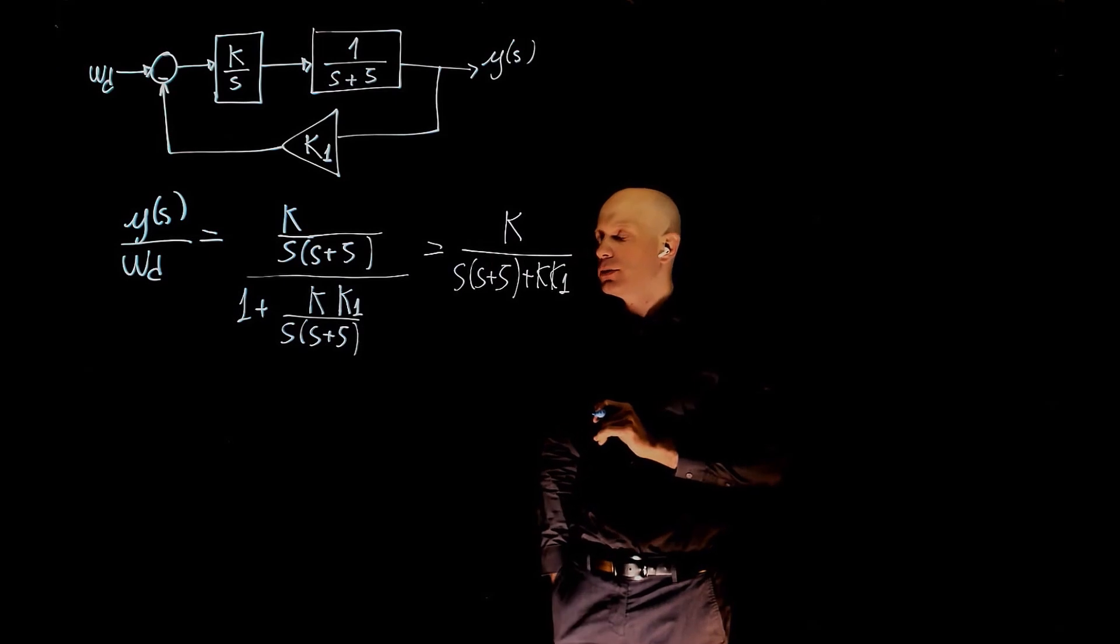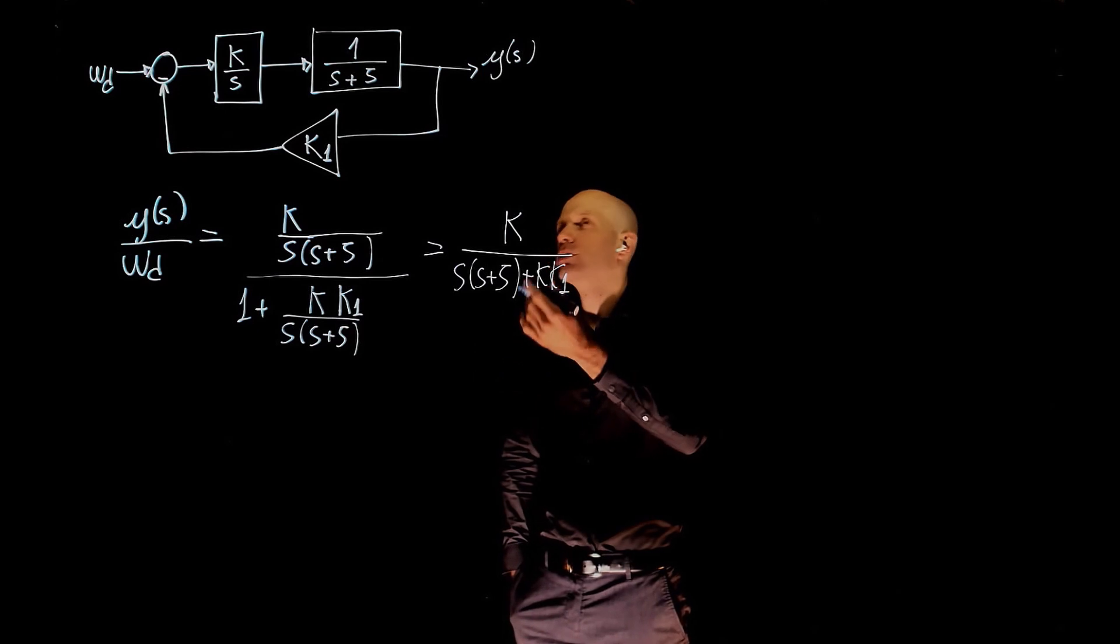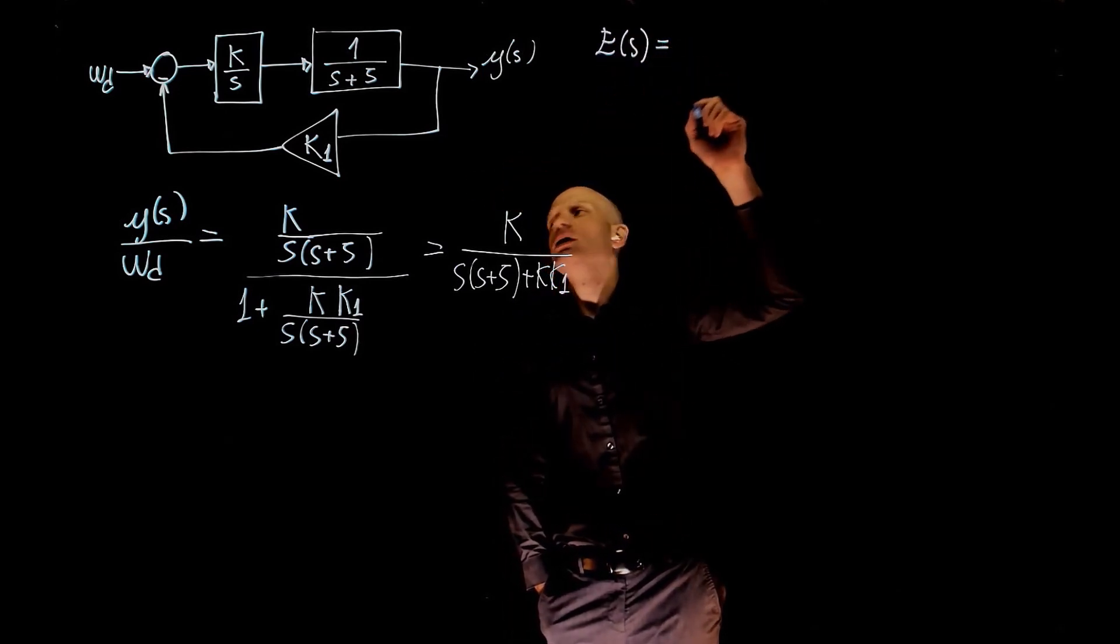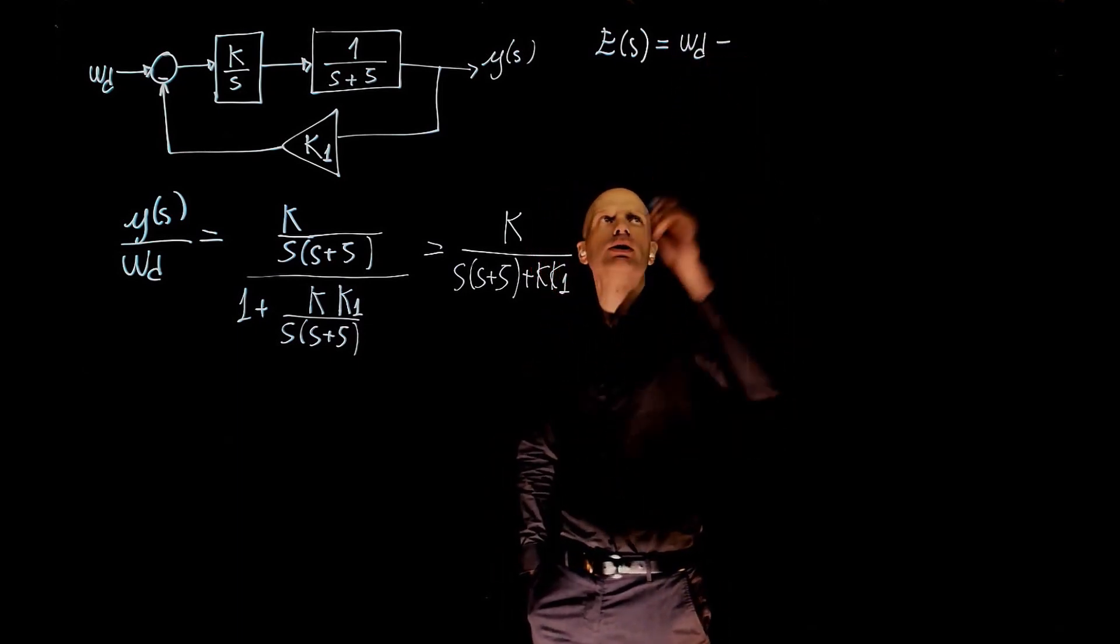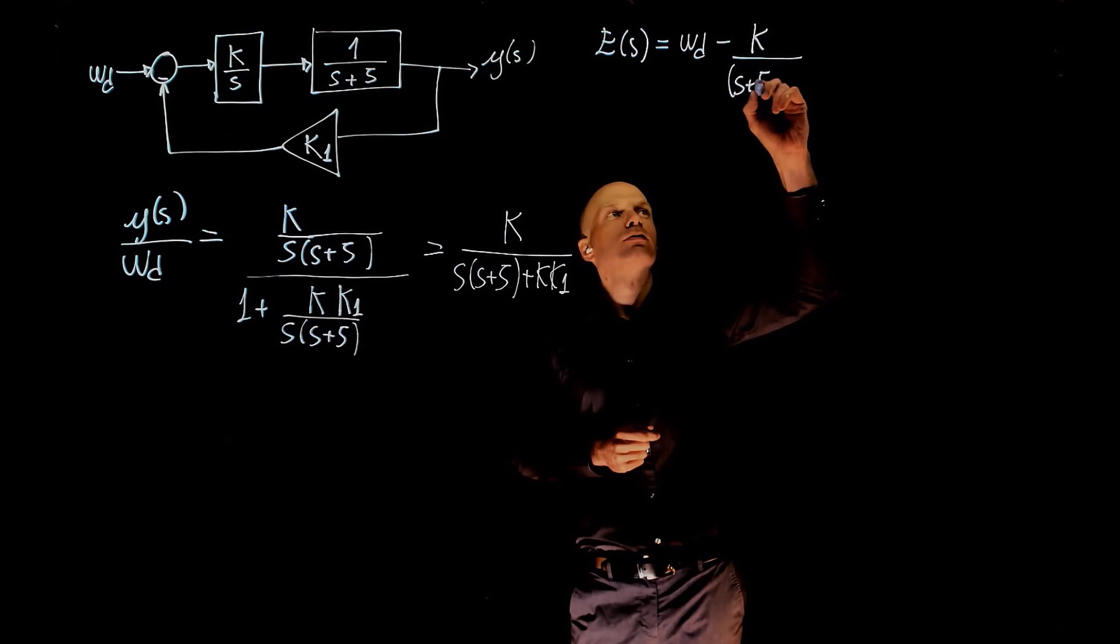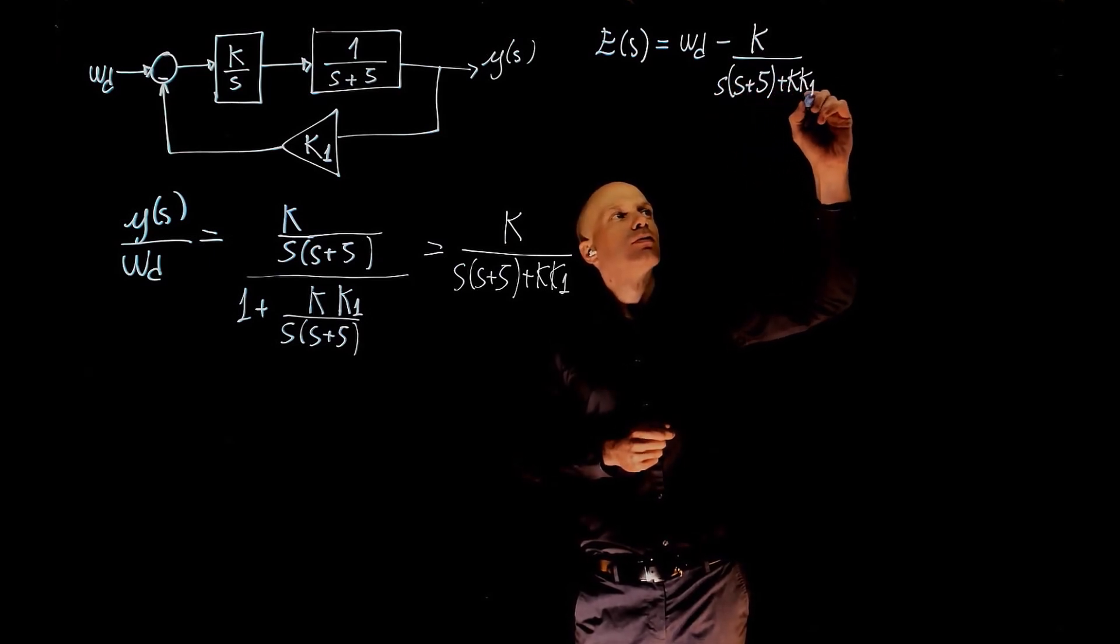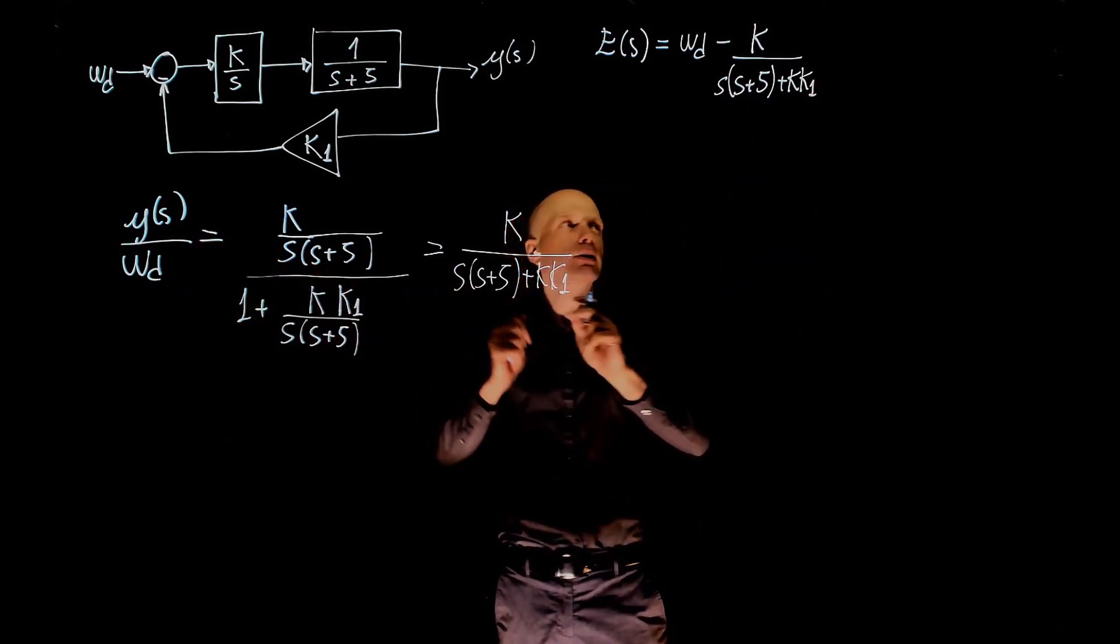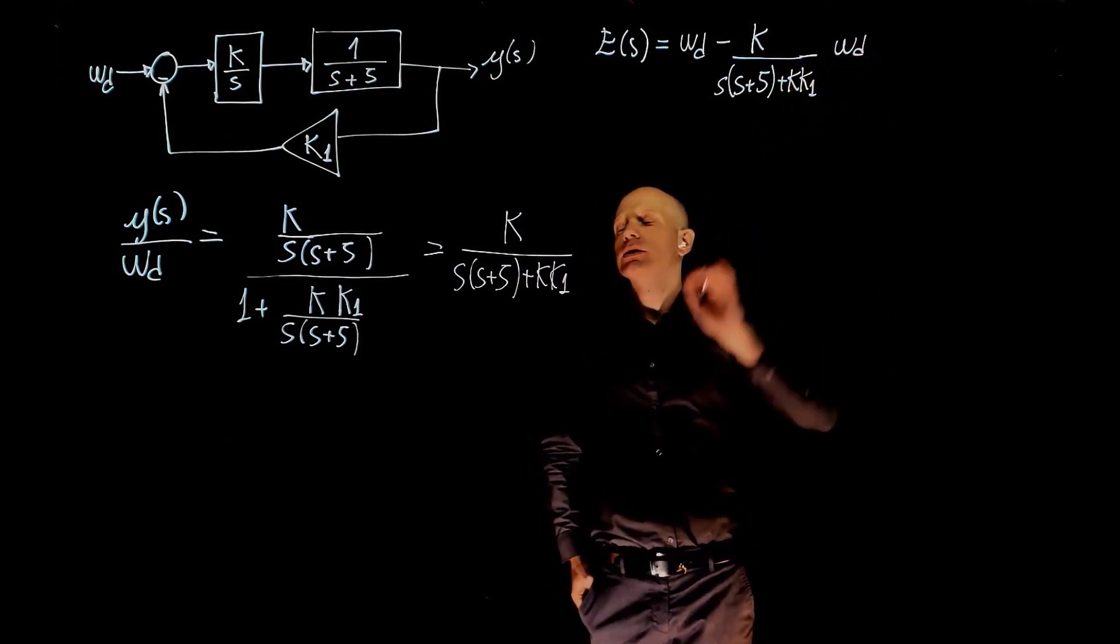This is now the transfer function between the input and the output. To find the steady-state error, we need to define the error first. The error is the input and the current output, which is this times the input. So this is y over wd. So if you multiply this by the input, this gives the current output.